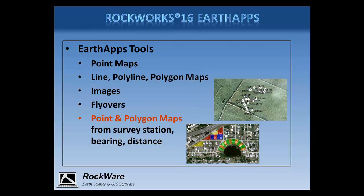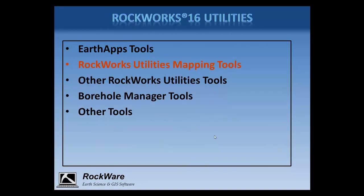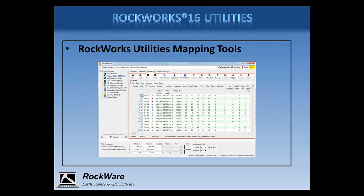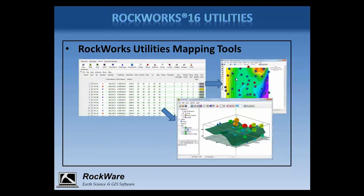The utilities programs in Rockworks also read data from the same row and column data sheet. These programs are accessed via the utilities tab in the program. Included here are programs for displaying maps, creating grid models, manipulating grids, solid modeling, processing linear and planar features, generating statistical diagrams, importing images, and much more. The output from the utilities is displayed in the 2D or 3D plot windows in Rockworks where they can be edited, appended with other layers, and saved for later display. Note that these views can also be exported to Google Earth.